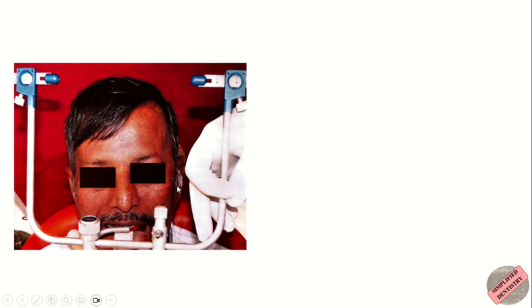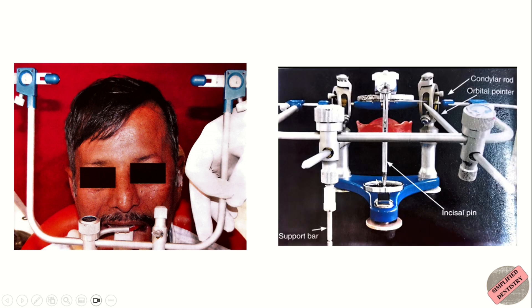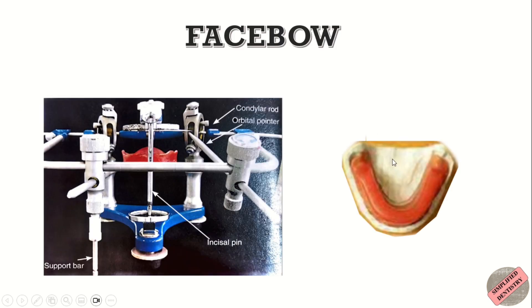It is difficult to orient the mandible to the articulator. This is the reason why the maxillary cast is oriented to the articulator with the same relationship between the maxilla and the condyles of the TMJ present in the patient, and this is done with the help of a face bow. Once the maxillary cast is mounted, the mandibular cast is mounted in relation to the maxillary cast with the help of a centric relation record.